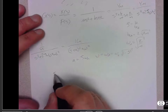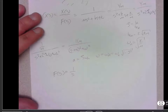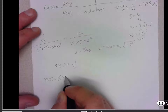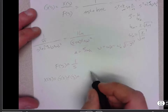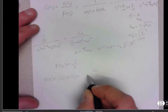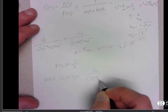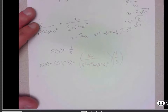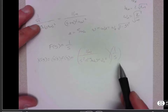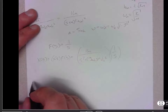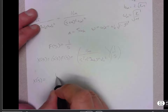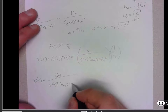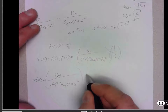So if we have a step response, we're talking about f(s) equal to 1 over s, or possibly some amplitude A over s. Then x(s) is G(s) times F(s), which gives us 1 over m times s squared plus 2 zeta omega-n s plus omega-n squared, all times 1 over s.